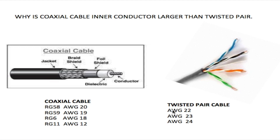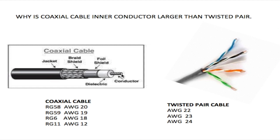Looking at twisted pair now, I see gauges of 22, 23, and 24. There are other gauges as well, but these are the most popular ones used within the telephone industry. You'll notice that twisted pair has much smaller gauges than coaxial cable. The largest gauge on coaxial is 12, while the largest on twisted pair is 22 — so coaxial is almost twice the size. The viewer was correct: the inner conductor is much larger on coaxial cable than twisted pair.